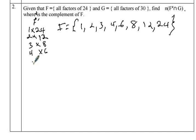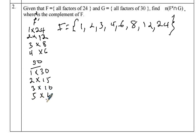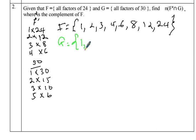Factors of 30: 1 times 30, 2 times 15, 3 times 10 — 4 does not work — 5 times 6 — 7 does not work. When I get to 8 and 9, I'm coming back to 10, so that's all. Set G has elements 1, 2, 3, 5, 6, 10, 15, and 30.